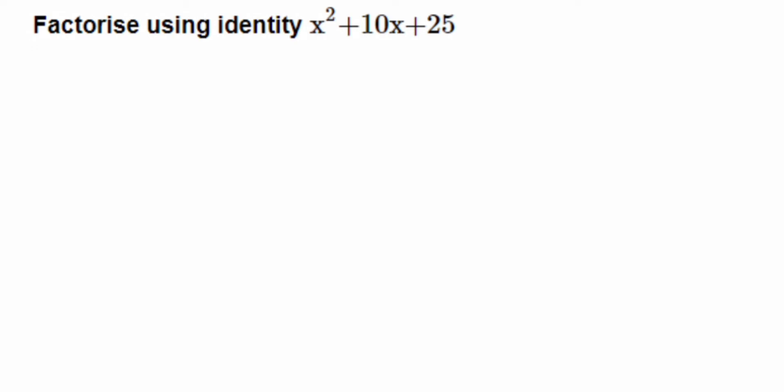But which identity? If you look here, we have all positive signs and there are three terms present. So obviously we have to use the first identity, which is (a + b)².